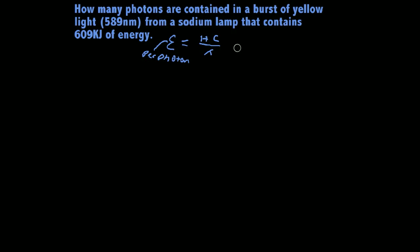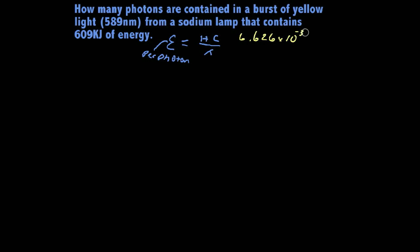Let me give you Planck's constant. A lot of professors will give this to you also. It's 6.626 times 10 to the negative 34. If you do 10 or 15 problems with it, you've just about got it memorized anyway.